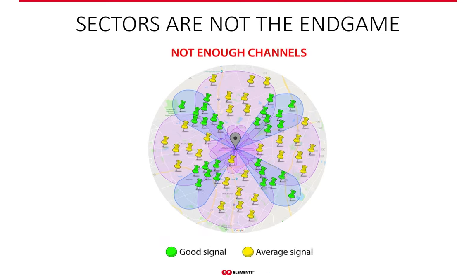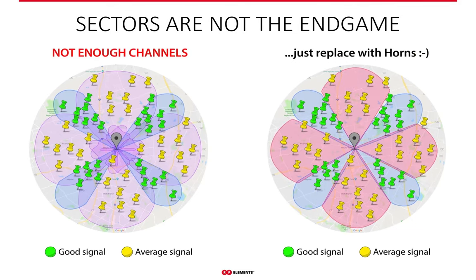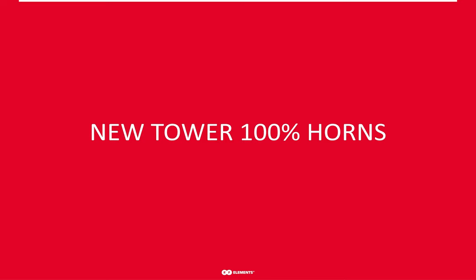Sectors are not the end game. With the hybrid approach, you'll need five channels — four for sectors and one for all four horns. But if you replace everything with horns, you'll only need two frequencies, saving three frequencies and contributing to improving the local spectrum in your operating area. With horns, this is completely achievable.